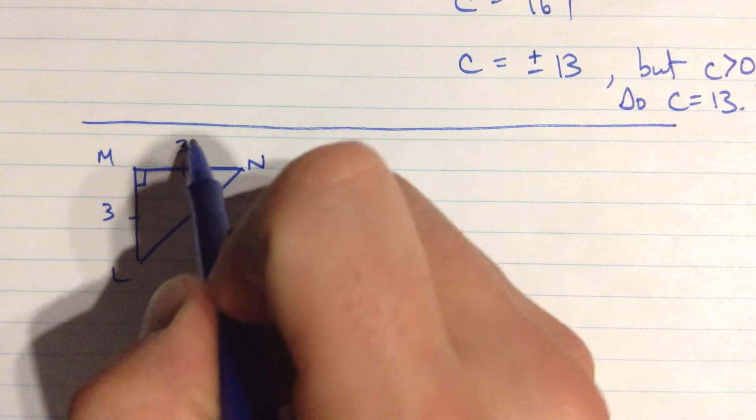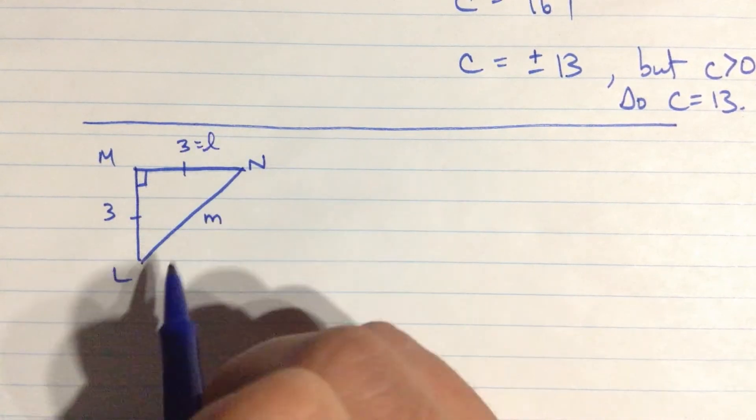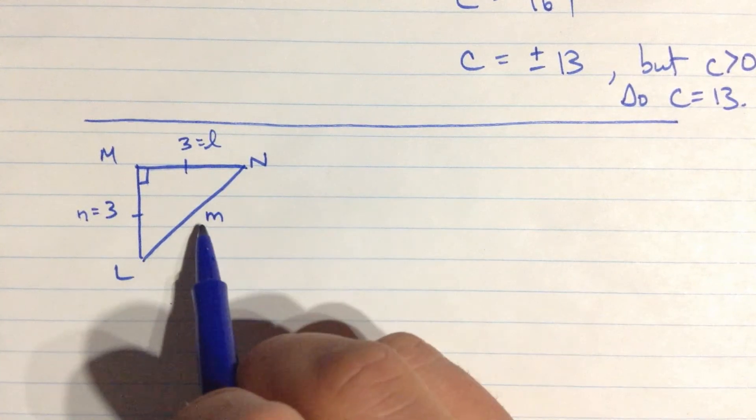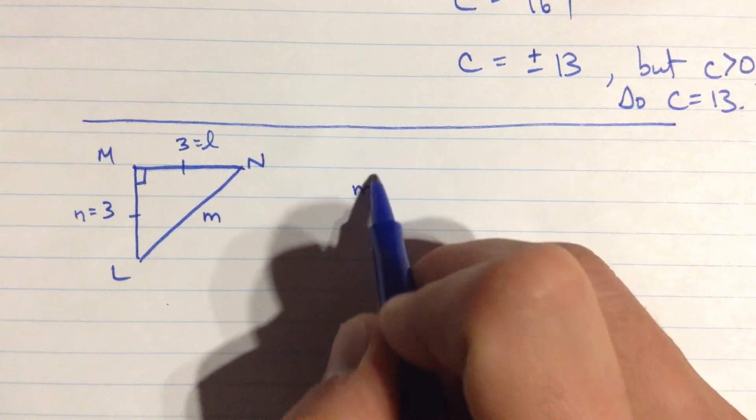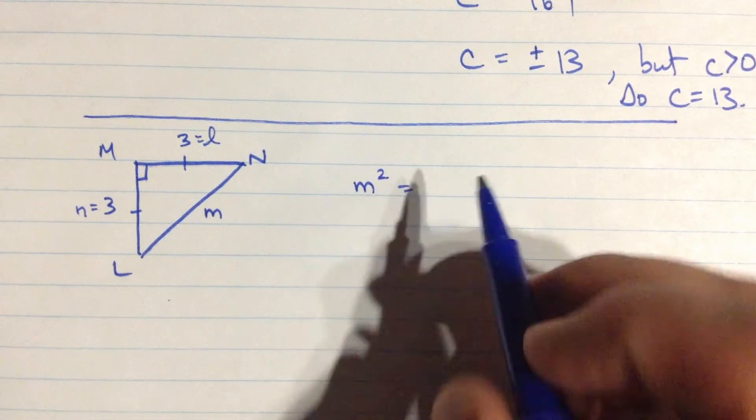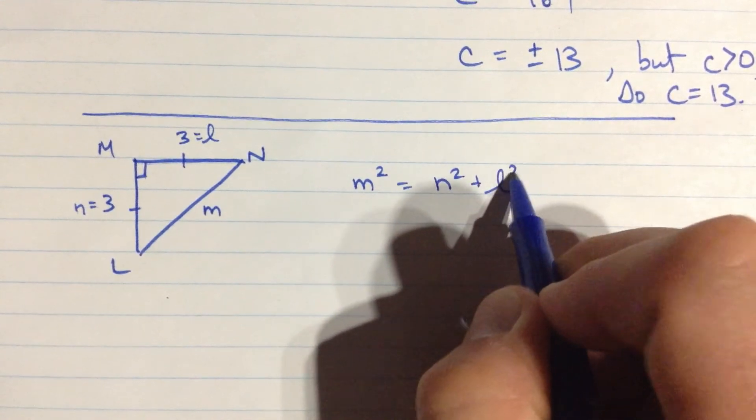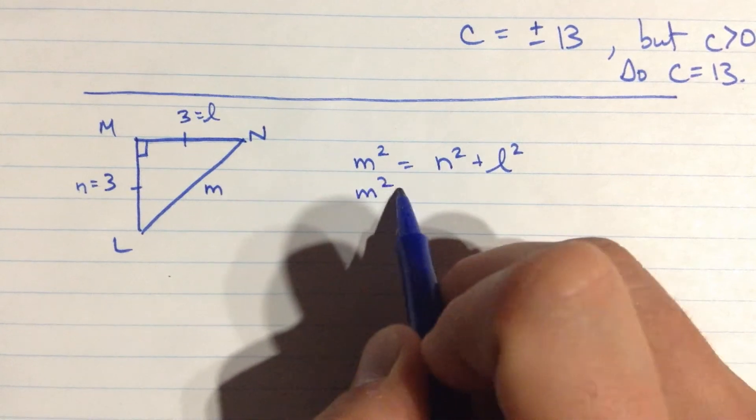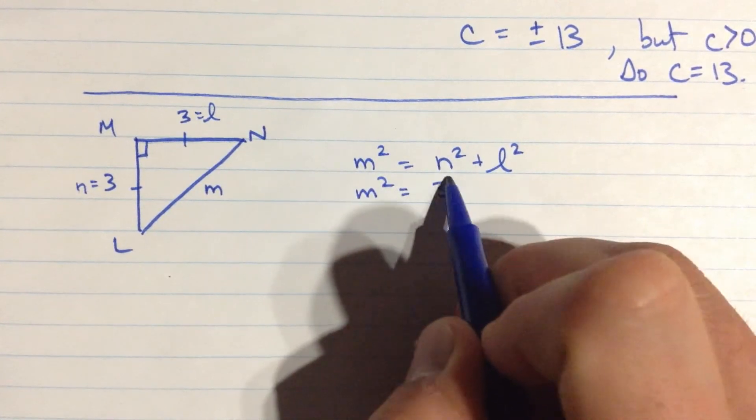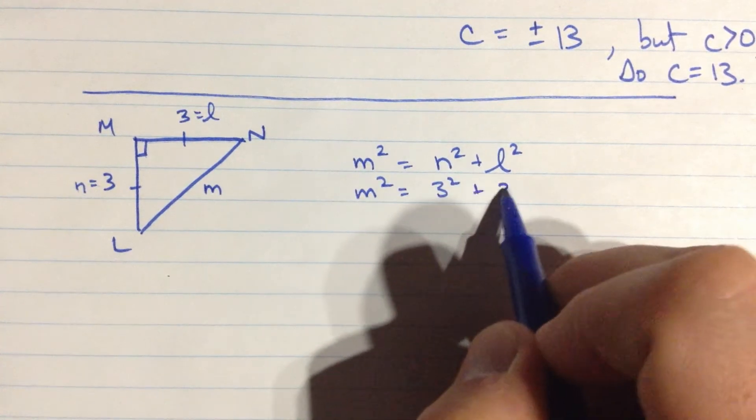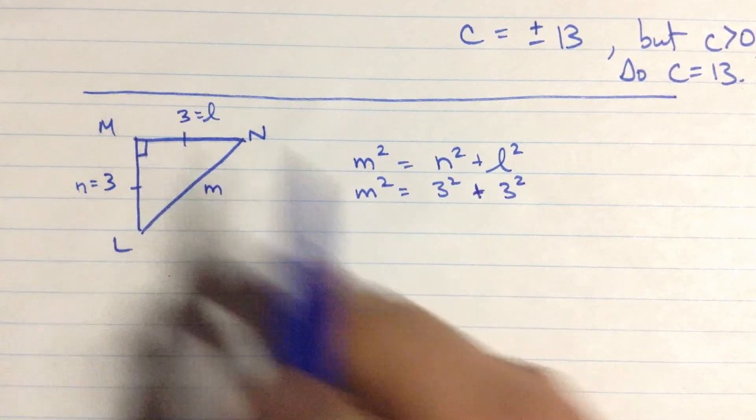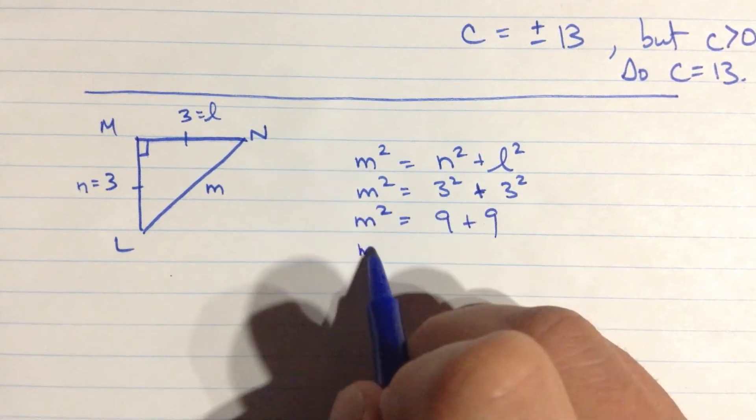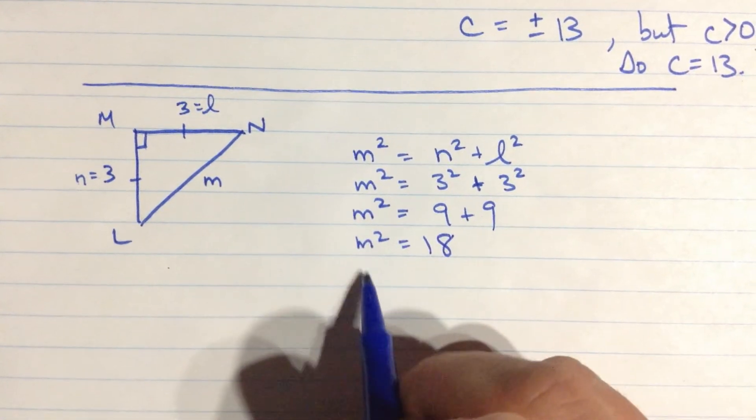So in this case, maybe I'll give them a label. This side is L, I'm going to use a scripty looking cursive L to be super clear, and this side is N. So the relationship is that this long side, the hypotenuse, its length squared is equal to the squares of the other two sides, is N squared plus L squared. Once again, use that cursive L so it doesn't look like a 1. M squared is equal to 3 squared here, plus another 3 squared right there. That means M squared is equal to 9 plus 9, or M squared is equal to 18.